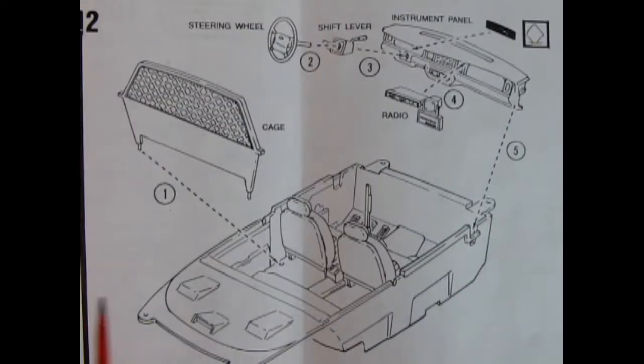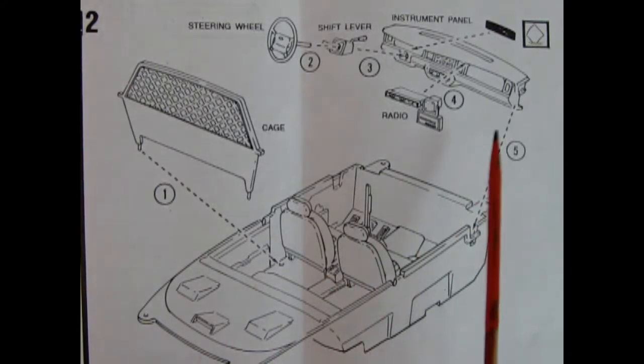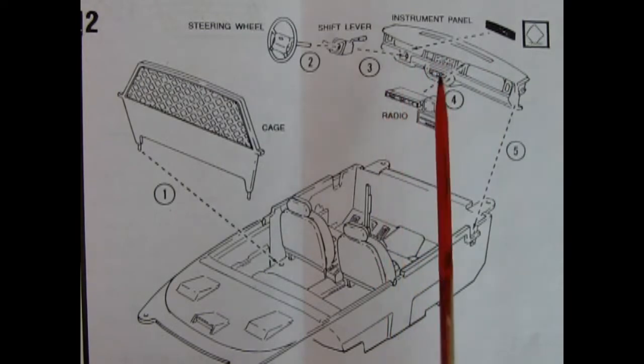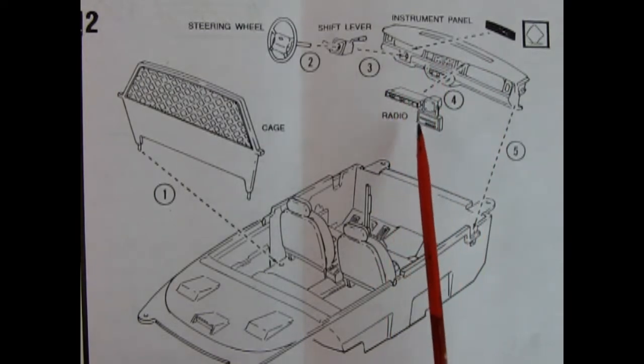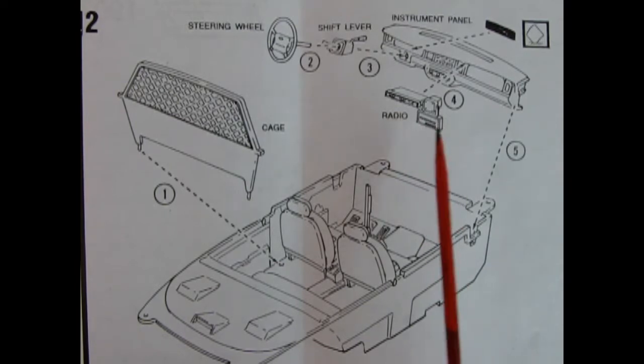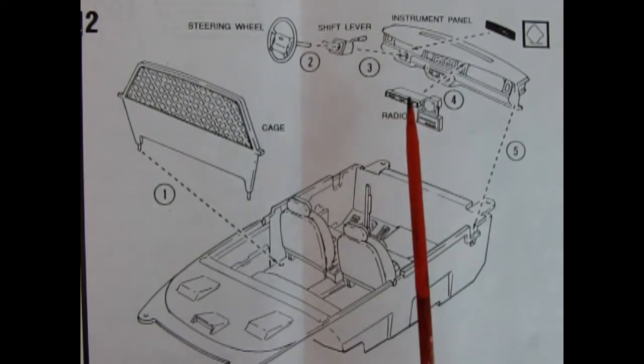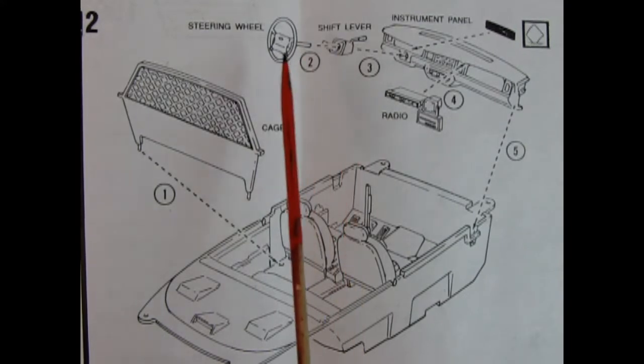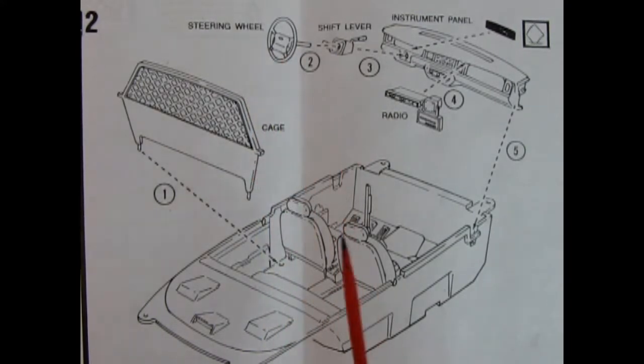In panel two we complete our interior with the cage in the back. That's to protect our officers from the criminals that would be in the back there with the perpetrators. Then we've got our dashboard. You get a decal for the instrument panel. Here you get the radio so you can listen to Sabotage by the Beastie Boys. Actually you should be listening for police signals. There's the shift lever and steering wheel. All this goes together and you get your complete police interior package.